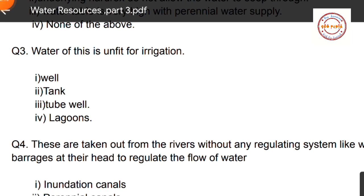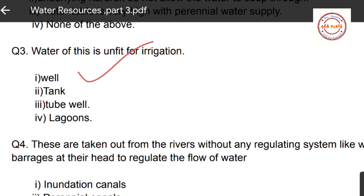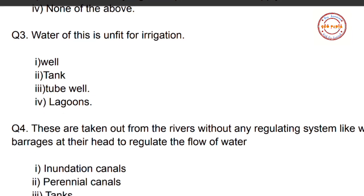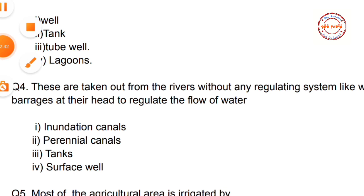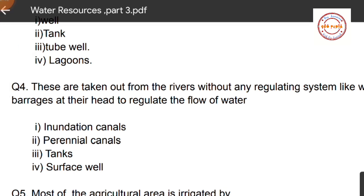Question number three: Water of which of these is unfit for irrigation? First option: well; second option: tank; third option: tube well; fourth option: lagoons. Lagoons have brackish, salty water which is unfit for irrigation as well as domestic purposes. So the correct option is number four — lagoons.